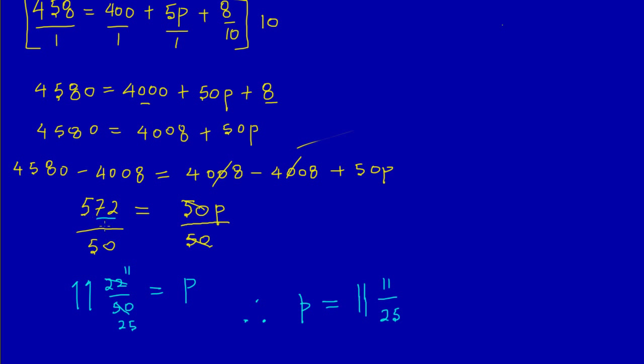So the value of p is 11 and 11 over 25. All I did was to reduce my improper fraction to a mixed number. And if you note here, I had the p on the right-hand side and I had my 11 and 11 over 25 on the left-hand side. I just really turned it around because it's a custom or the way in which we usually read it. We usually read the variable first. Any questions though, feel free to leave a comment and I'll get back to you as soon as possible.